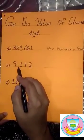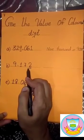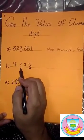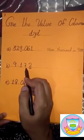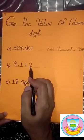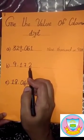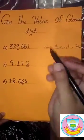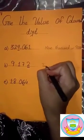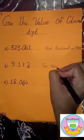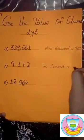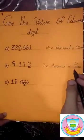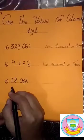Our second question is in decimal. The question is 9.172. In this question, we find the value of two. We know that after the decimal, the first digit value is in tenths, the second digit value is in hundredths, and the third digit value is in thousandths. So in this question, our digit two is in thousandths, and we write it as 2/1000.